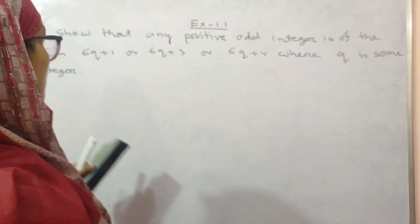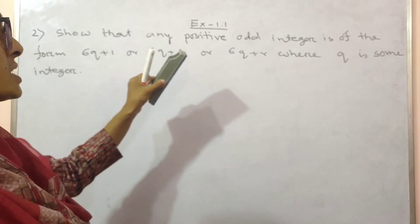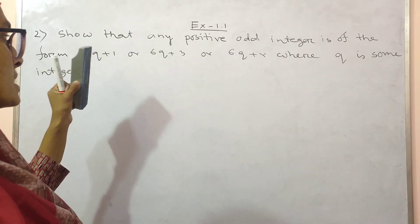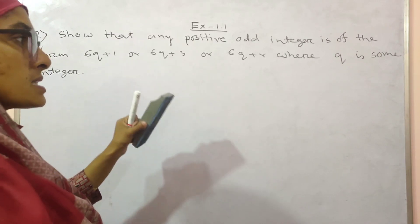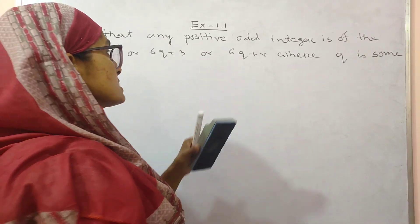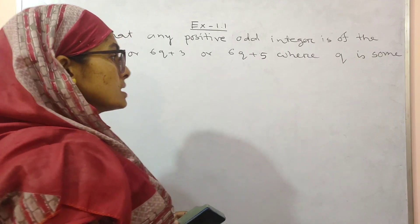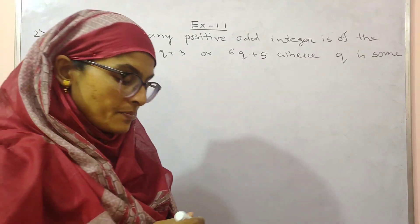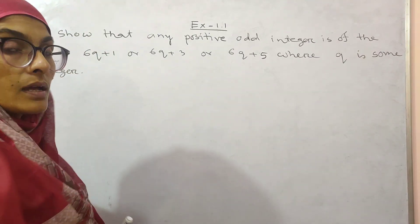Here number 2: show that any positive odd integer is of the form 6q plus 1, or 6q plus 3, or 6q plus 5, when q is some integer. So, you have to use the division algorithm.